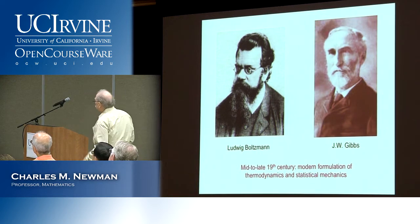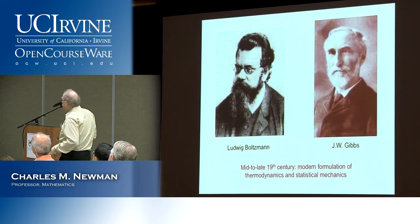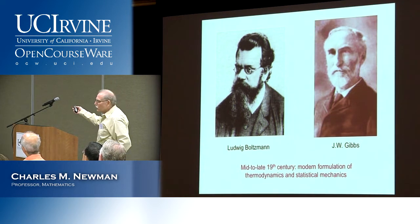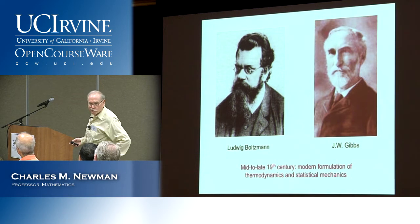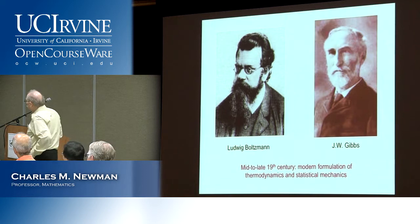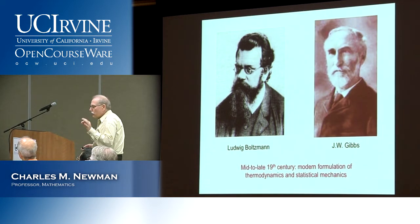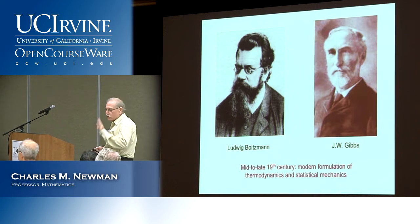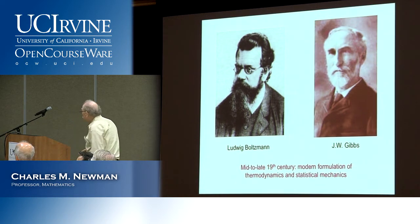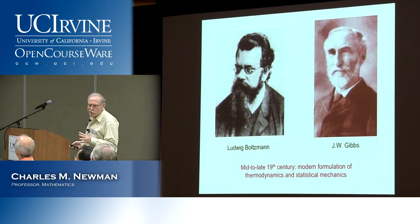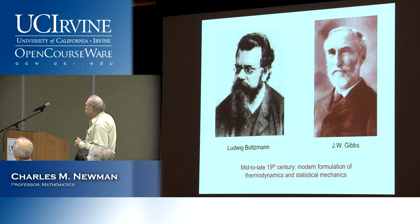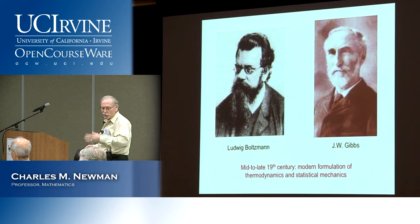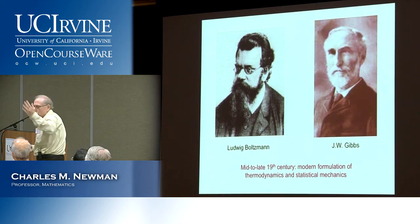Boltzmann and Gibbs were 19th century physicists. Gibbs was probably the most distinguished American scientist of the 19th century — there is a Gibbs Street in University Heights, just a block from where I'm living. Boltzmann's gravestone has the formula for entropy engraved on it. He was actually bipolar and committed suicide, partly because he was afraid that his ideas — the atomistic theory of matter — were not being accepted. Those ideas became much more accepted a few years after he died. So the lesson is: you should wait a bit.